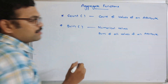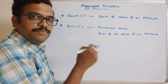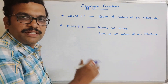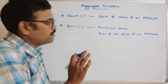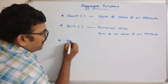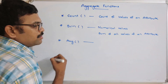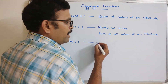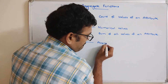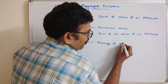If you consider an attribute like percentage, the SUM function will give the complete sum of all the percentages. Similarly, there is the AVERAGE function, which will give the average of all values. Both SUM and AVG are applied to numerical values.